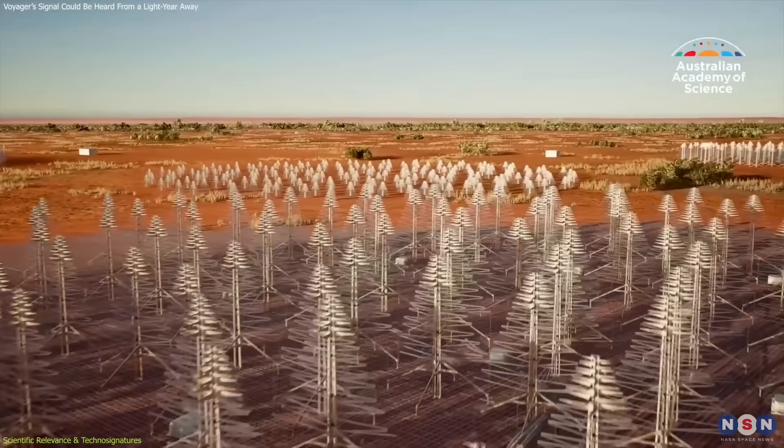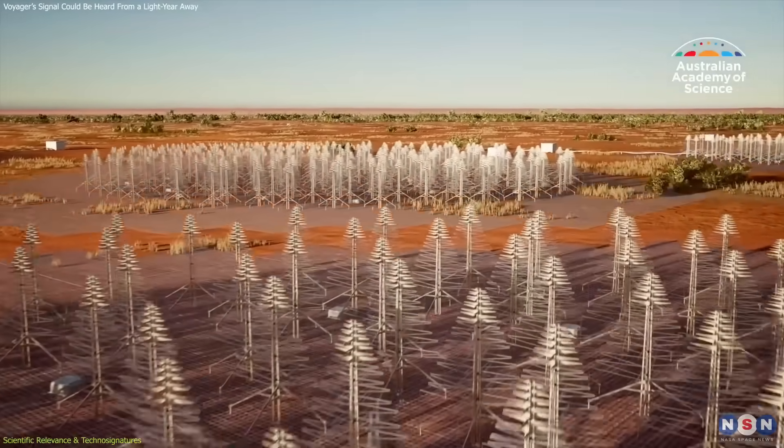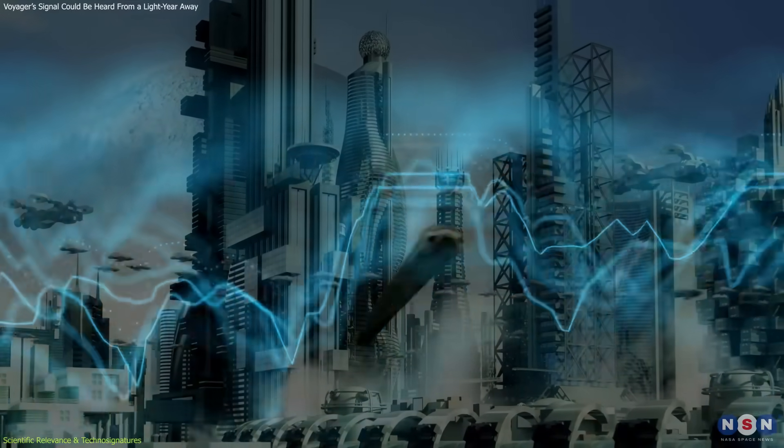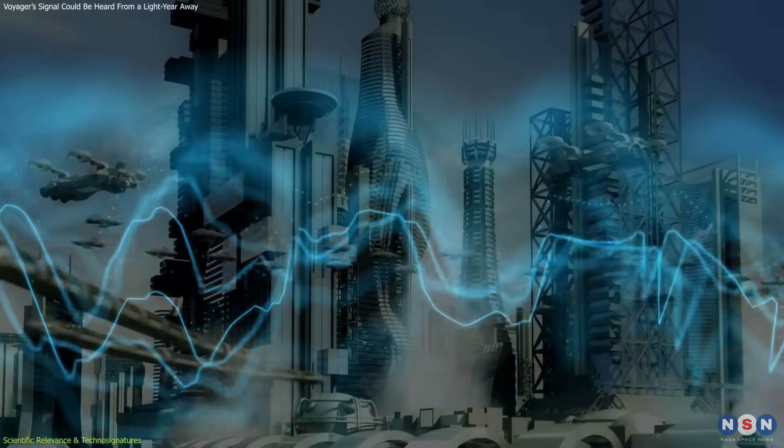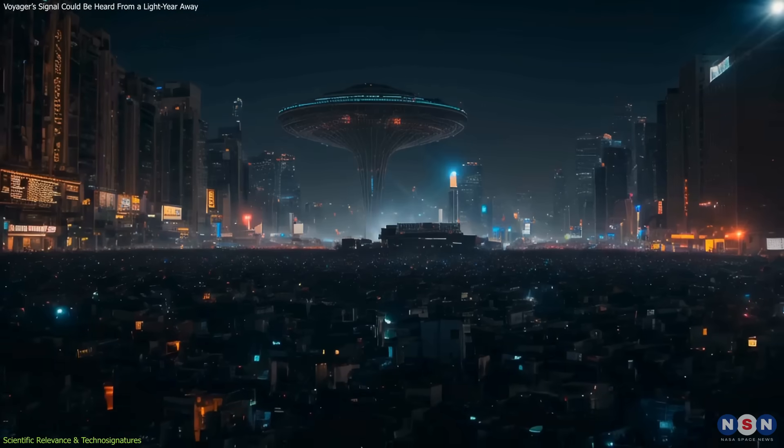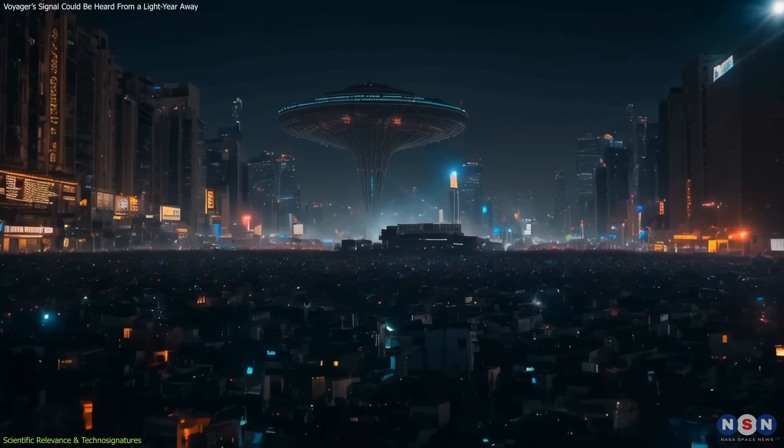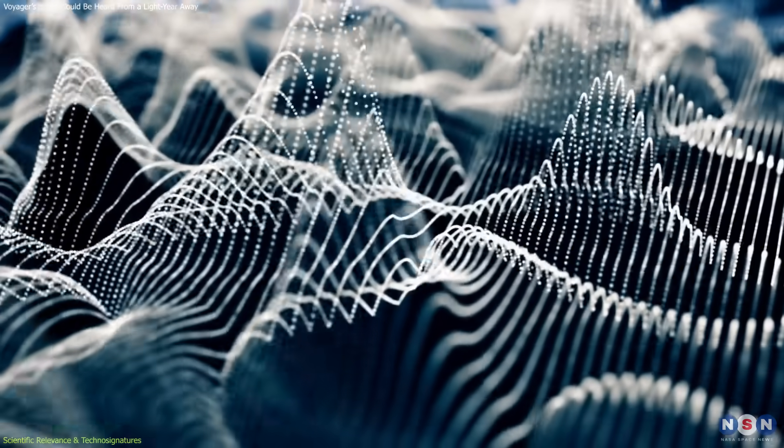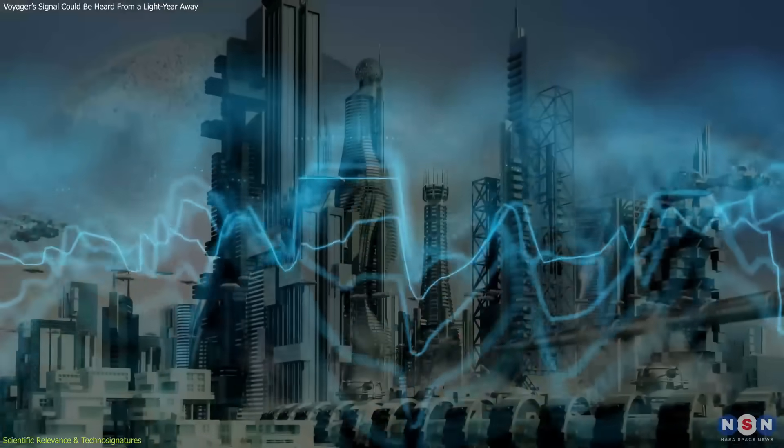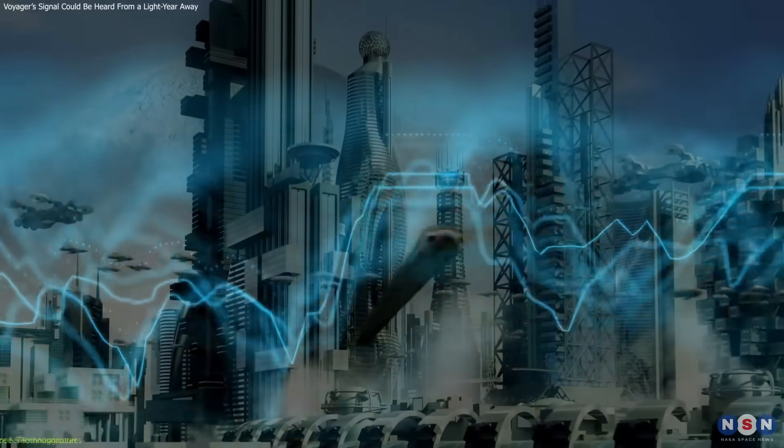And now, with tools like the Square Kilometer Array coming online in the next few years, our ability to detect similar emissions from elsewhere will increase dramatically. This repositions the strategy behind SETI. Rather than waiting for a direct message from a distant civilization, it may be more productive to search for the everyday electromagnetic noise that another society might inadvertently release.